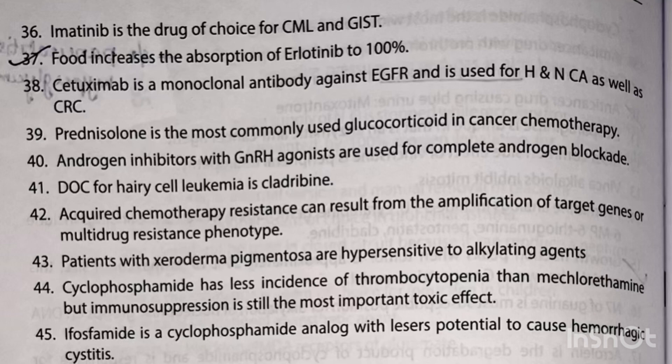Imatinib is the drug of choice for CML and GIST. Food increases the absorption of erlotinib to 100 percent. Cetuximab is a monoclonal antibody against EGFR and is used for head and neck cancer as well as colorectal cancer. Prednisolone is the most commonly used glucocorticoid in cancer chemotherapy. Androgen inhibitors with GnRH agonist are used for complete androgen block. Drug of choice for hairy cell leukemia is cladribine. Acquired chemotherapy resistance can result from amplification of target genes or multi-drug resistant phenotype. Patients with xeroderma pigmentosum are hypersensitive to alkylating agents.